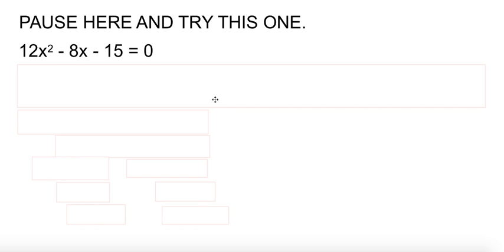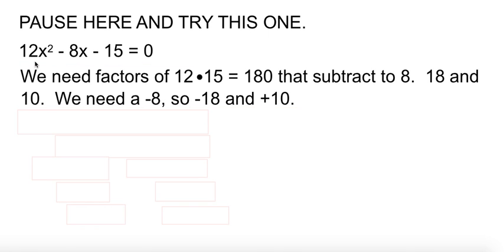So we're going to need factors of 12 times 15, which is 180, that subtract to make 8. In time you go through all the factors of 180, you get to 18 and 10. Subtract to make 8. We need a negative 8, so we need negative 18, positive 10.